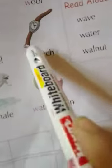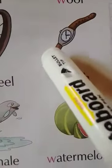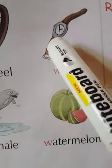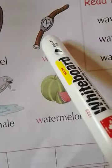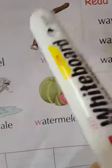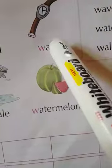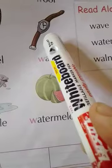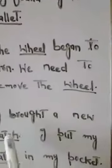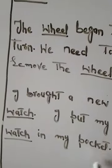W is for watch. Watch ہم گھڑی کو کہتے ہیں اور اس کو ہم اپنے کلائی میں پہنتے ہیں، یا اپنے جیب میں بھی رکھتے ہیں کبھی کبھی۔ ہم اس سے time دیکھتے ہیں — یہ ہمیں time بتاتی ہے۔ I brought a new watch. I put my watch in my pocket.